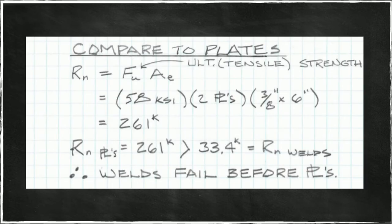We'll compare this to the plates. Nominal strength of the plates will be the ultimate stress of the plate material times the effective area of the plates. Our tensile strength of the material, which is A36 steel, and that by specification has a minimum strength of 58 ksi. It might be stronger, but as designers we don't know that ahead of time. There are two such plates in our load path. Each plate has a cross section of 3/8 inch by 6 inches. That leads us to 261 kips, nominal strength for our plates.